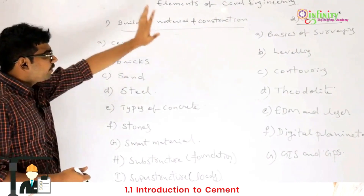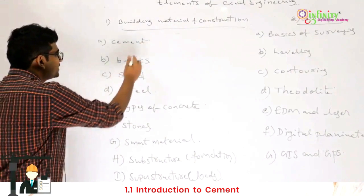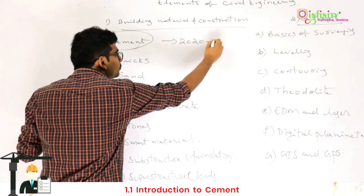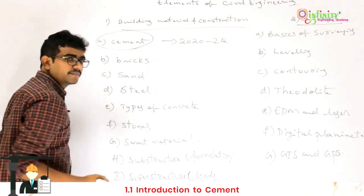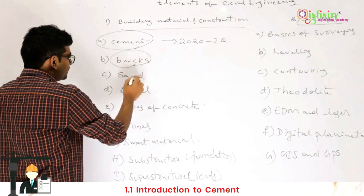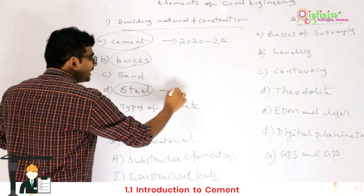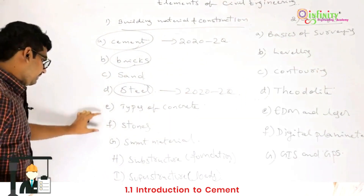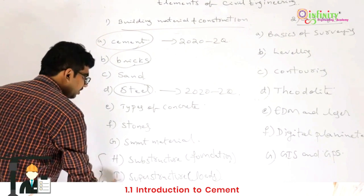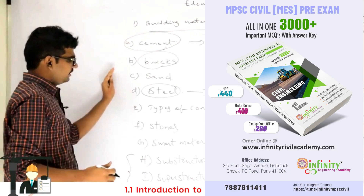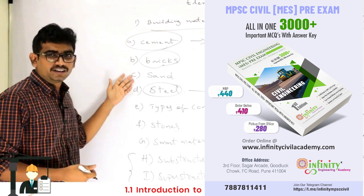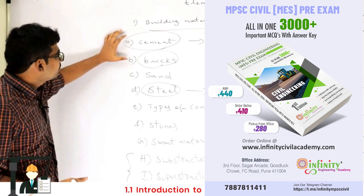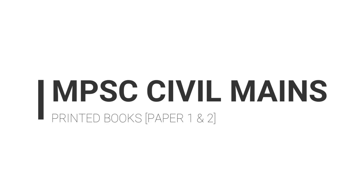Now the important topics of this subject — first one is cement. It is a very important topic; in 2020 two questions came from this topic alone. Bricks is also important, and steel is also important — again in 2020 two questions came from steel only. Substructure, superstructure, and automation in construction can yield a maximum of one mark, sometimes questions are given from these, sometimes not. But cement, bricks, and steel are very very important.